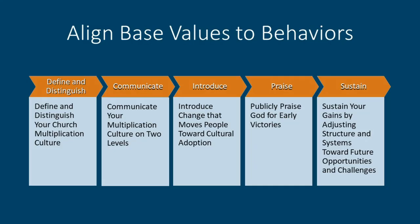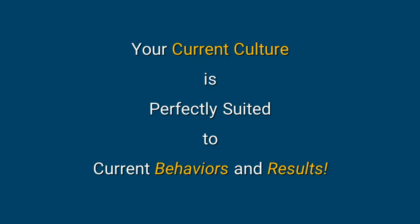The goal is to align what your core team decides are your base values — your church multiplication values — with the behaviors of the people in your community. We spent a lot of time assessing your current culture, which is perfectly suited to the results you currently enjoy. Now it's time to bridge the gap between what you know and what you've experienced in the past, what your people are comfortable with, and what's going to make them a little less comfortable as we move toward the future.